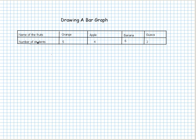Here you can see the names of the fruits: orange, apple, banana, and guava, along with the number of students who like to eat each fruit. Five students are interested in eating orange, four in apple, six in banana, and two in guava.